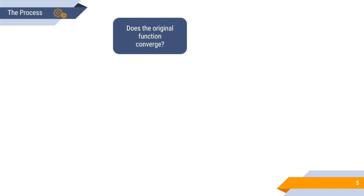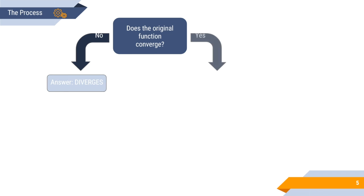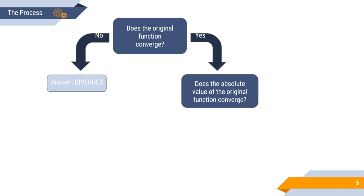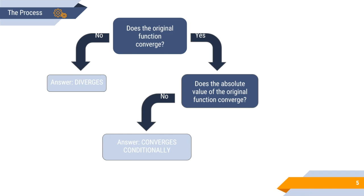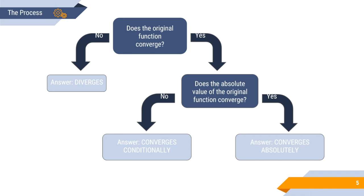In order to figure out if the original function converges or not, we first need to do all the tests for convergence or divergence. If it does not converge, then you already know that the absolute value doesn't converge either, so overall it just diverges. But if the original function does converge, then you need to do the same tests for the absolute value of the function. If the absolute value does not converge, then the function is conditionally convergent. But if it does, then it's absolutely convergent.